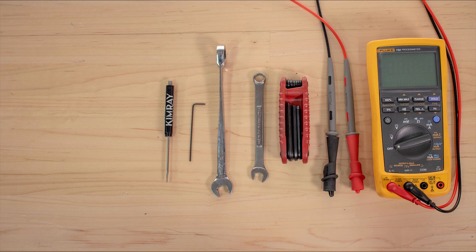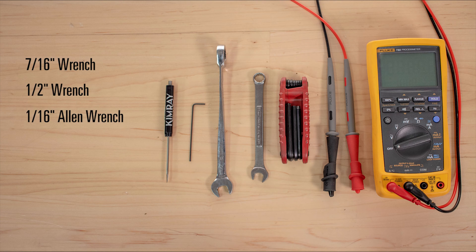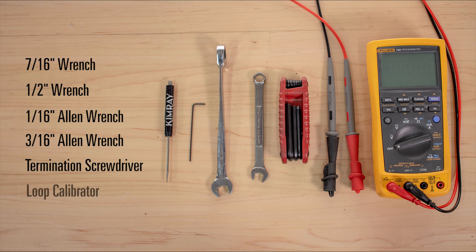For this process you will need a 7/16 wrench, a half inch wrench, a 1/16 allen wrench, a 3/16 allen wrench, a termination screwdriver, and a loop calibrator.